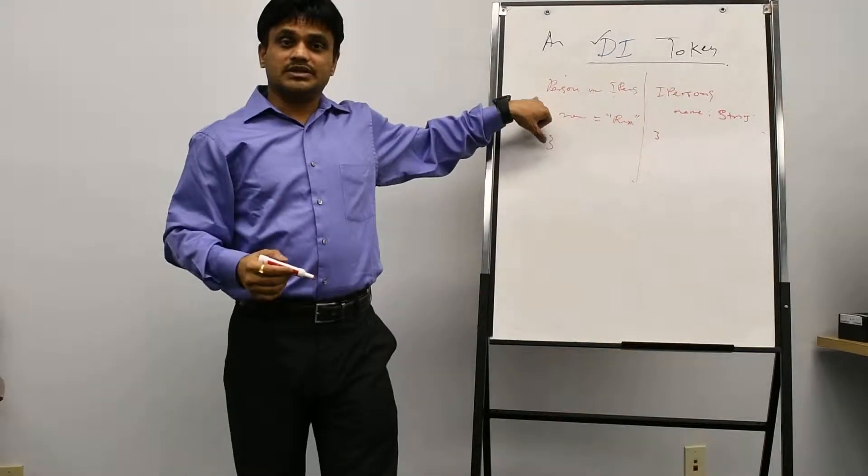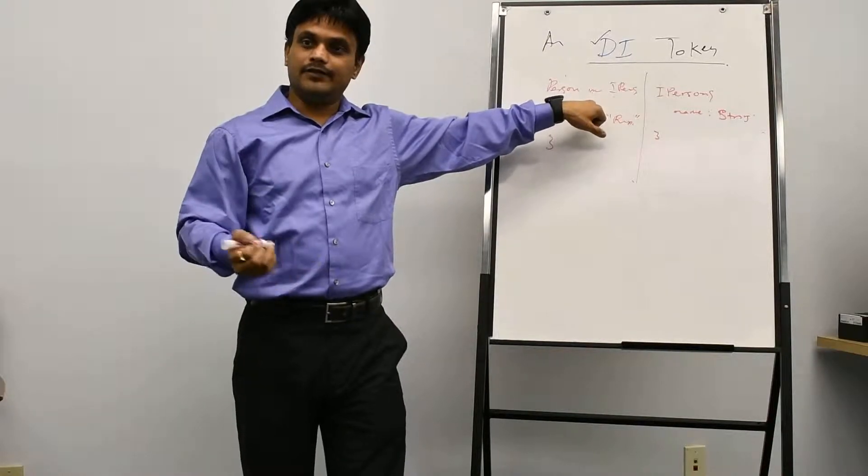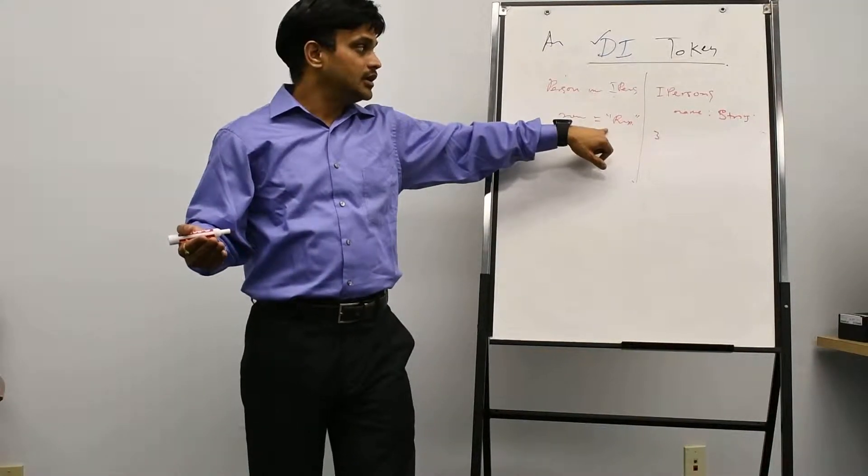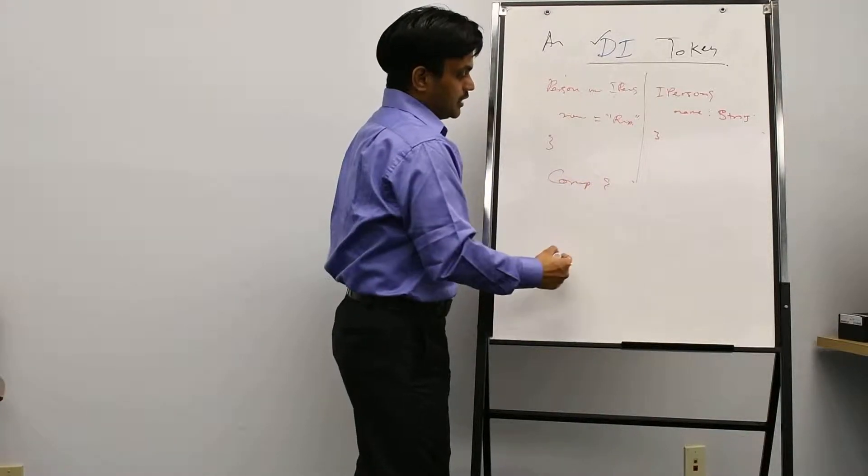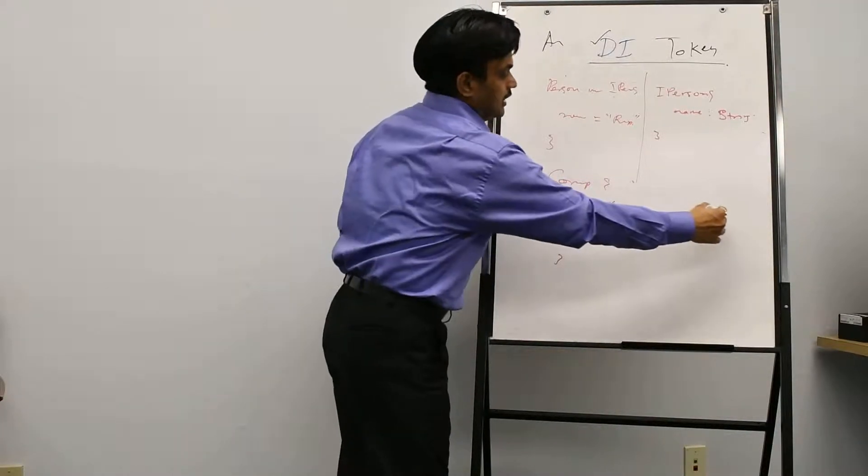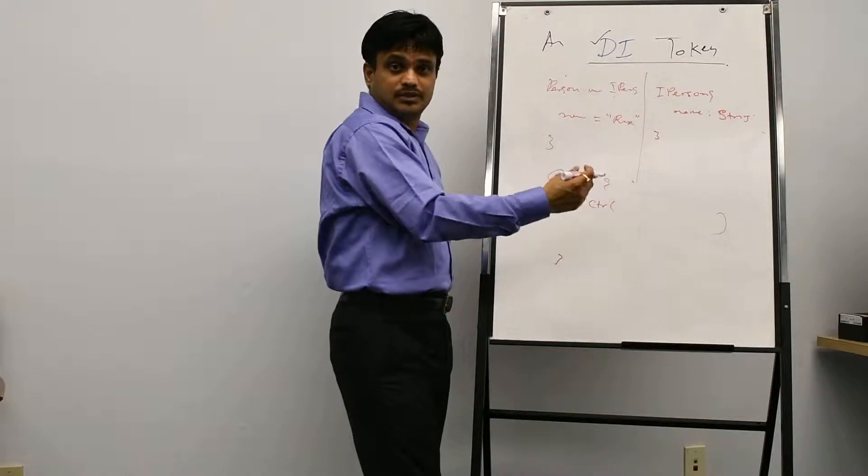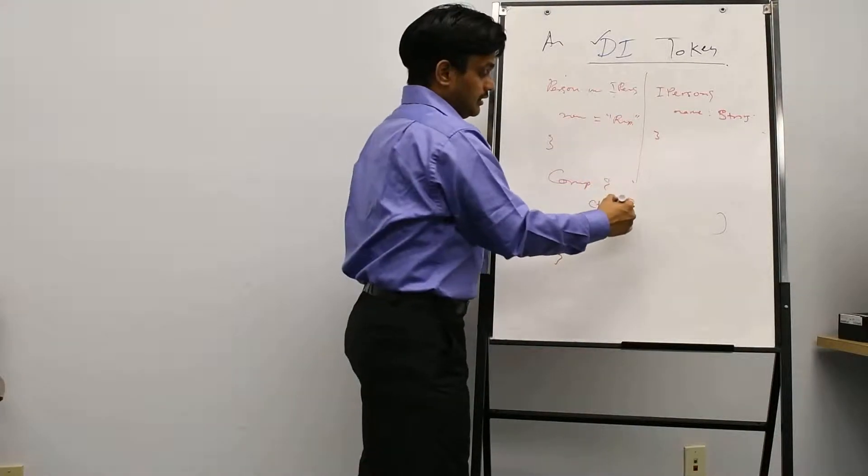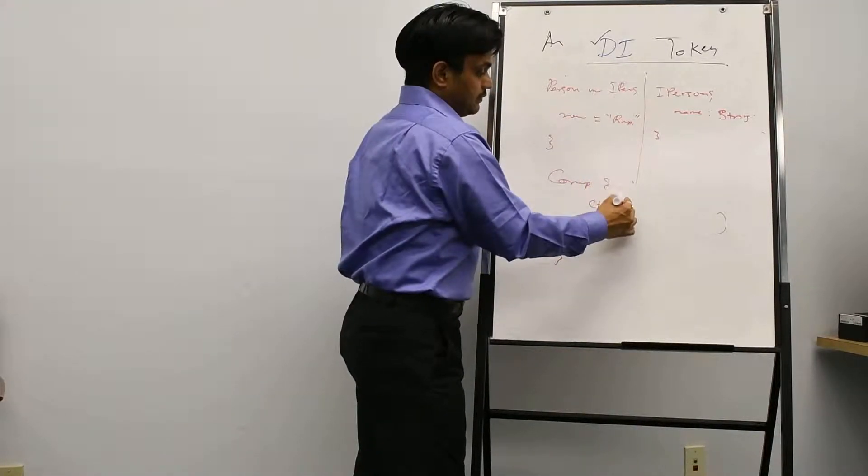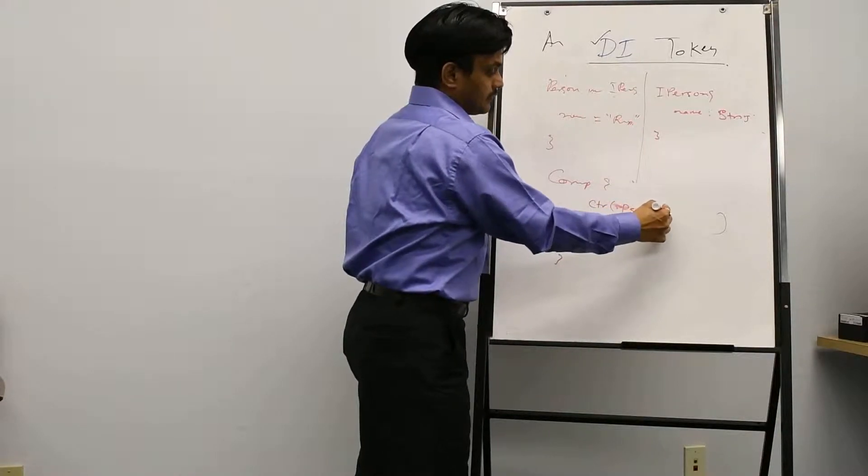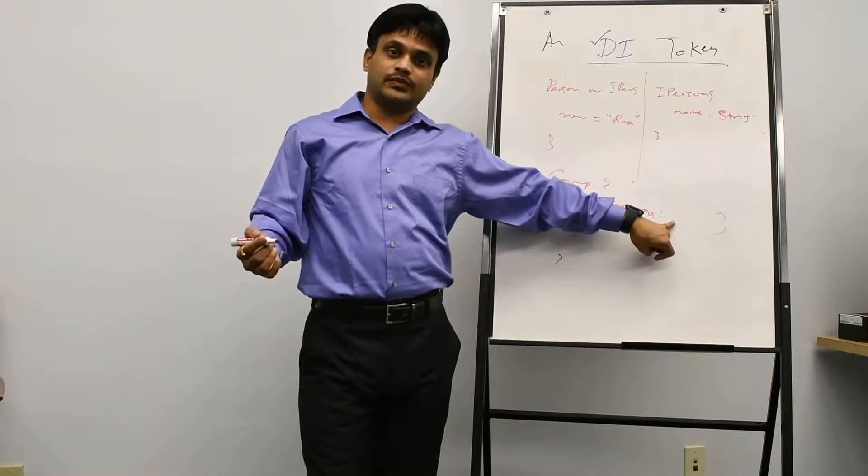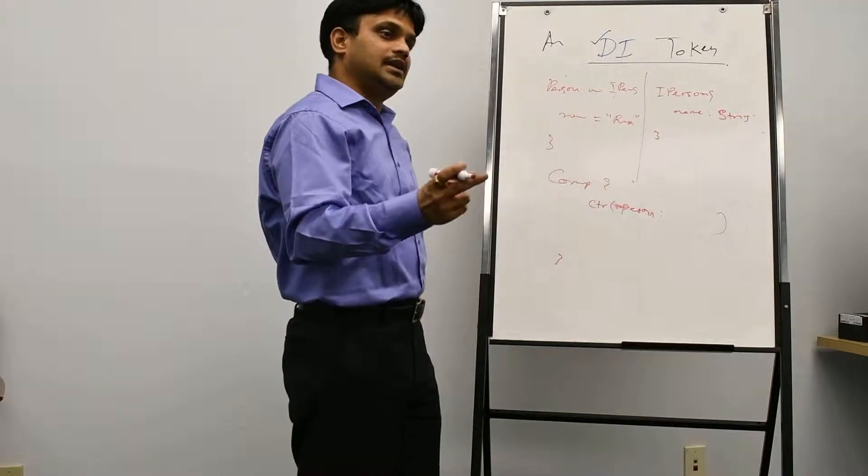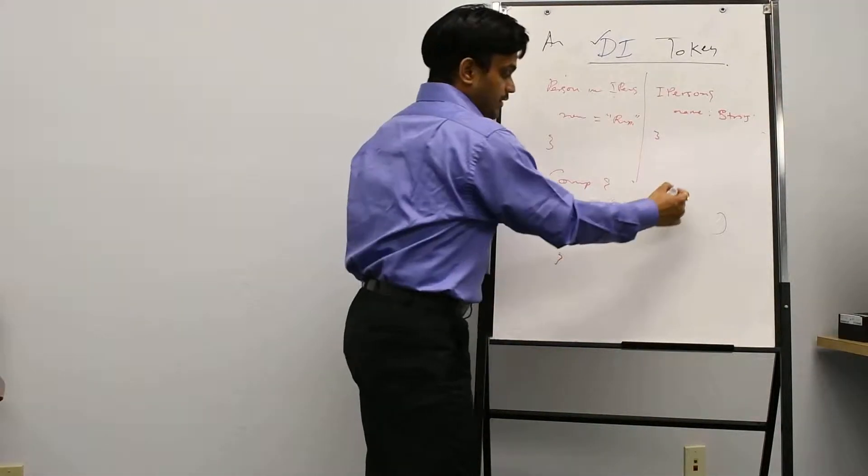So this is person implementing IPerson. We are assigning the name as Rupesh. And now let's say in my component there is a constructor. And in that constructor I am asking for a person to be injected here. We know that if we put the class name you will get it, because class name is the DI token. But if I put IPerson...